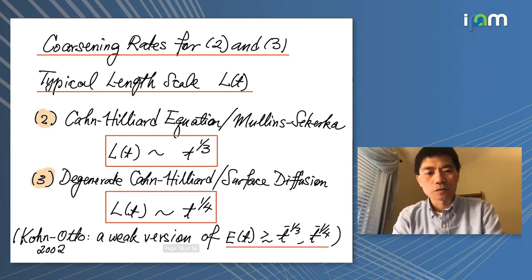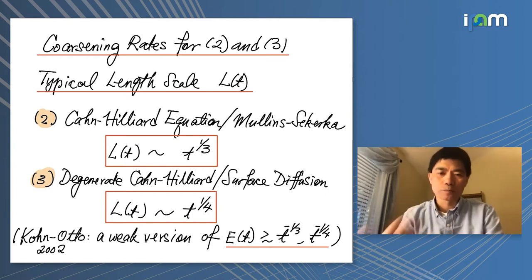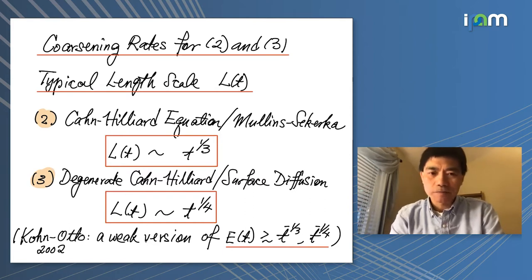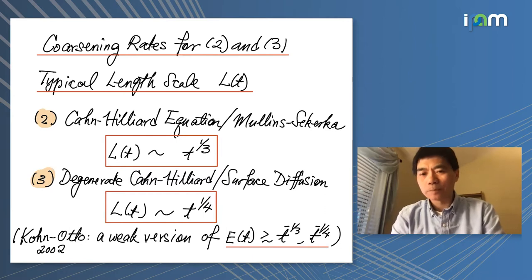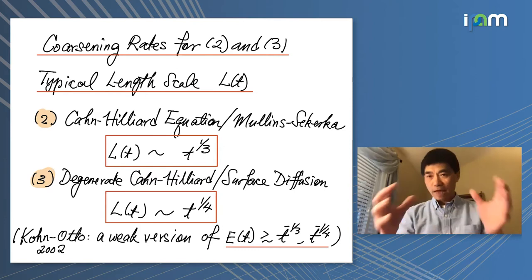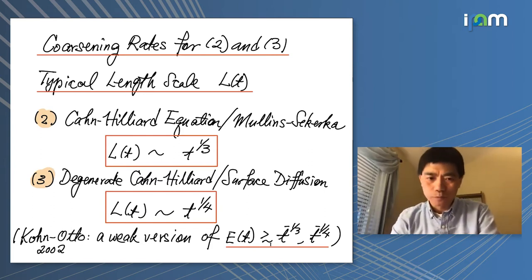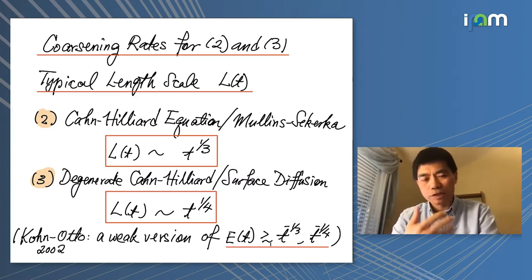These coarsening rates are made rigorous in general form by Kohn and Otto. They give a weak version of this statement: the length scale increases with a certain parameter. Because these are highly nonlinear equations, it is very hard to give a pointwise estimate. Instead, they express this information using energy. The energy is captured by the surface area, which is related to the length scale. An equivalent statement of length scale increasing is energy bounded from below.